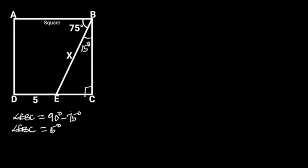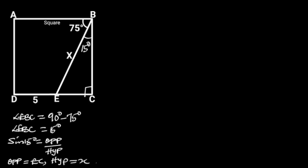From trigonometric ratios, sine 15 degrees is equal to opposite over hypotenuse. The opposite of triangle BCE is EC, and the hypotenuse is X. If we plug in these values, we will have sine 15 degrees is equal to EC over X. By cross-multiplication, EC is equal to X sine 15 degrees.